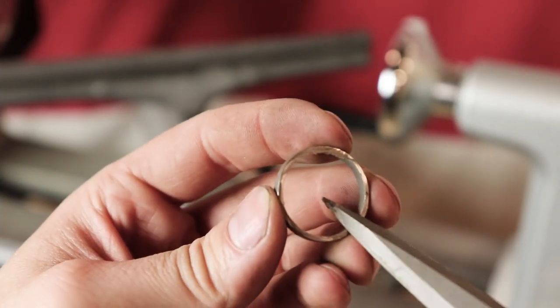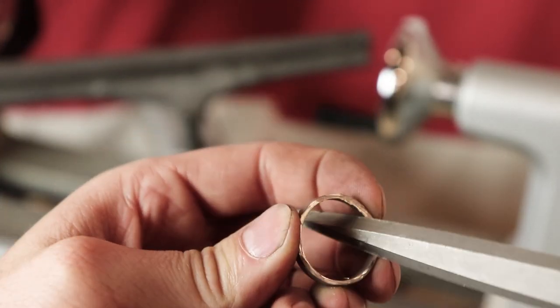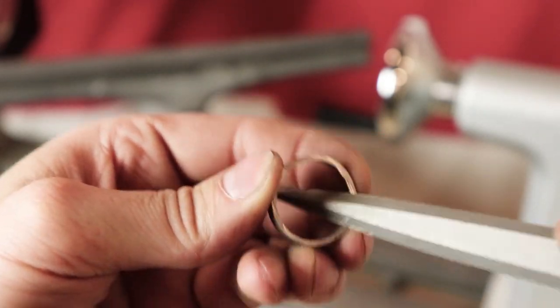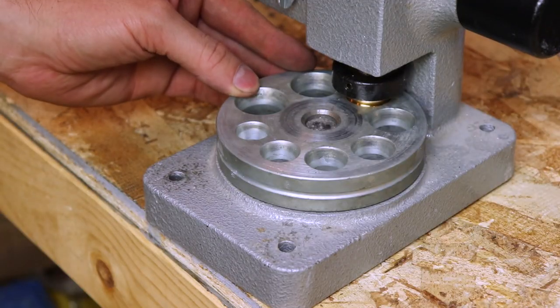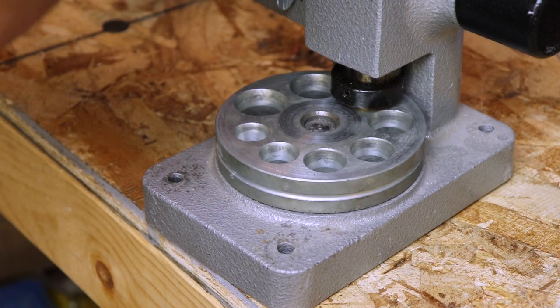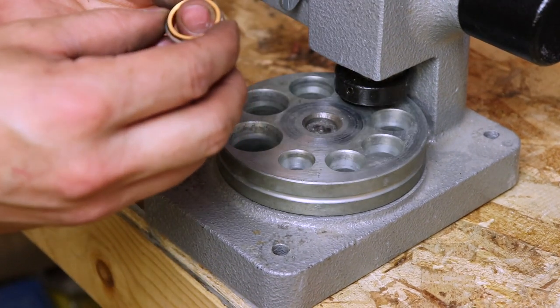We're going to take a file and just remove any of those really sharp burrs so I don't cut myself. I'm putting it into my ring compressor and shrinking it just enough that the titanium ring will slide over top.